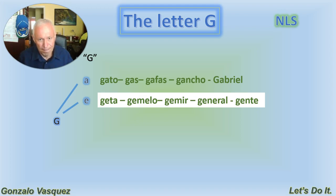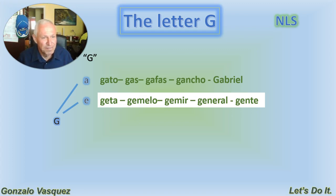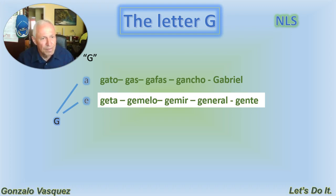Gemelo — that means twin. Gemir — when a person is in pain or discomfort, they gemir. General — general. Gente — people. When it's more than two or three persons, you say gente, like a group of people. Esa gente.